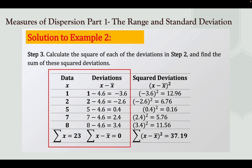In step 3, we calculate the square of each deviation from step 2 and find their sum. Simply raise each deviation to the power of 2. So: (−3.6)² = 12.96; and (−2.6)² = 6.76.